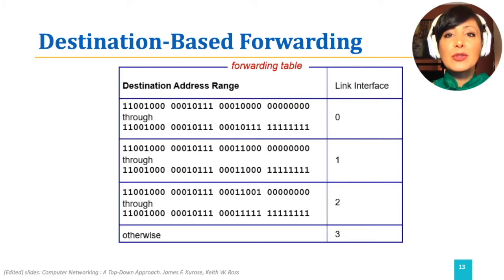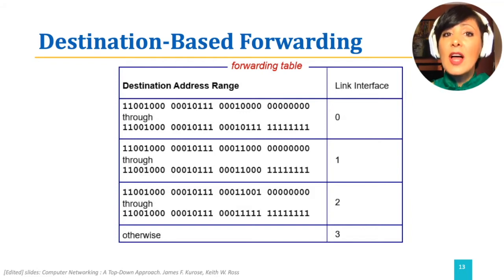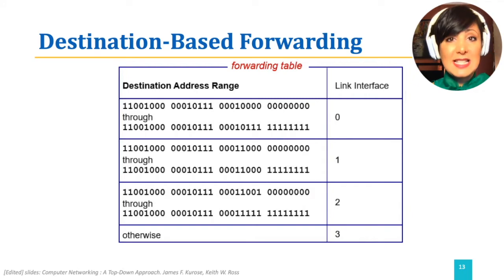Back to our driving example, this would be similar to deciding which turn to take in an intersection on the path based on the destination address only.